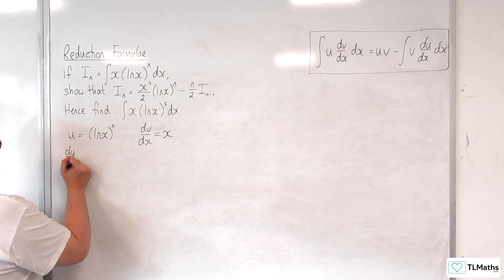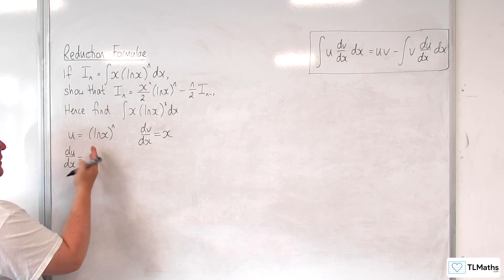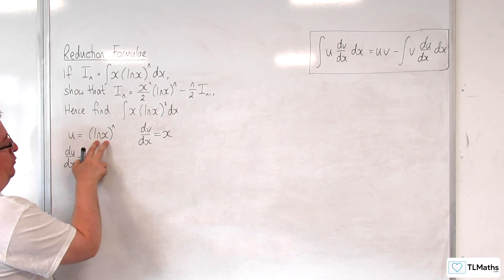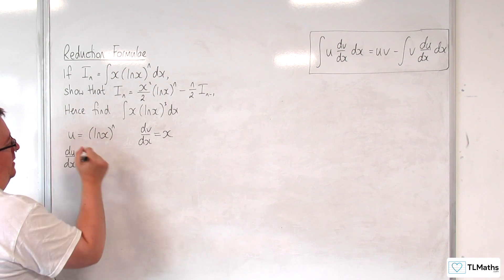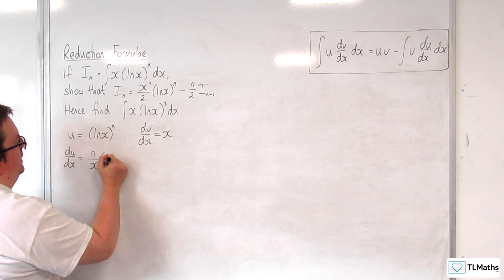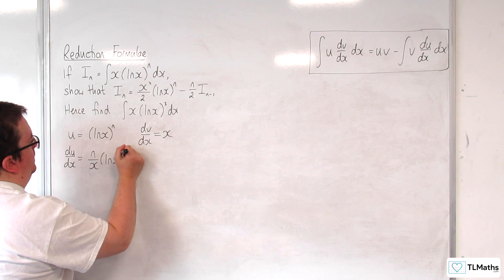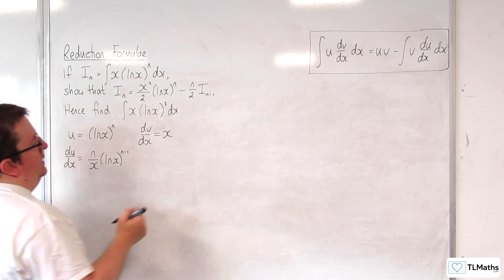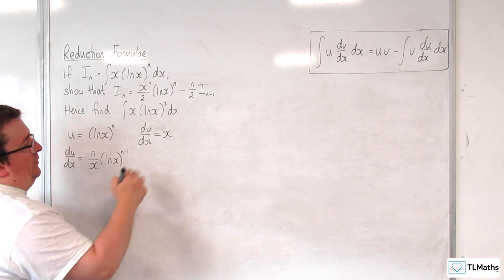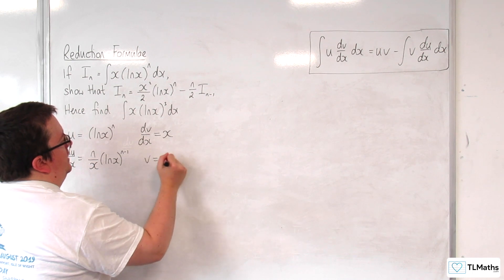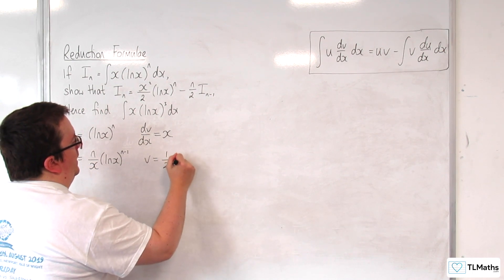So du by dx is going to be, now differentiating this, the derivative of the inside comes outside, which is 1 over x. The n is going to come down to the front, so we'll have n over x and then take 1 from the power. And here dv by dx is x, so v integrates to 1 half x squared.